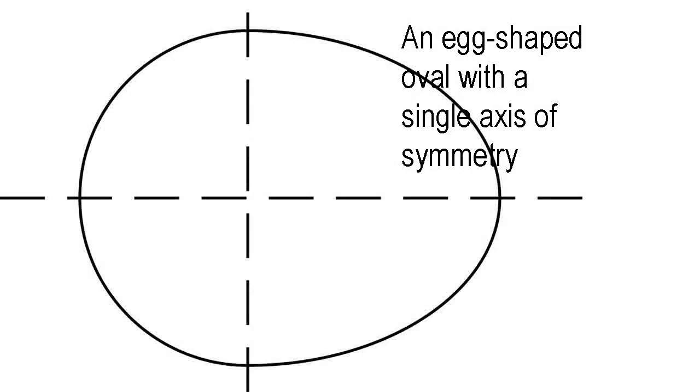An oval is a curve that looks like a squashed circle, but in contrast with the ellipse, doesn't have a precise mathematical definition. The word oval comes from the Latin ovus for egg. Unlike ellipses, ovals sometimes have only a single axis of reflection symmetry instead of two.